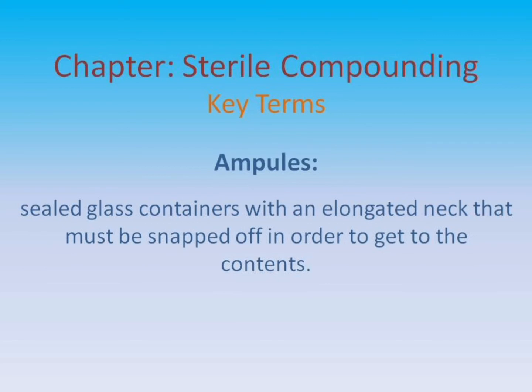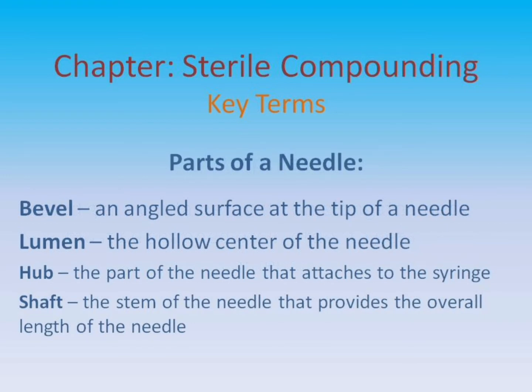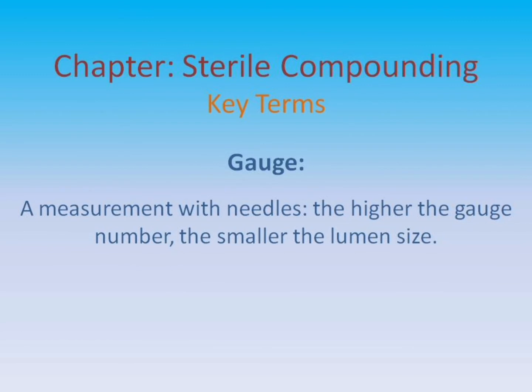Ampules: sealed glass containers with an elongated neck that must be snapped off in order to get to the contents. Parts of a needle — Bevel: an angled surface at the tip of a needle. Lumen: the hollow center of the needle. Hub: the part of the needle that attaches to the syringe. Shaft: the stem of the needle that provides the overall length. Gauge: a measurement with needles — the higher the gauge number, the smaller the lumen size.